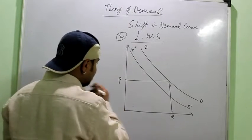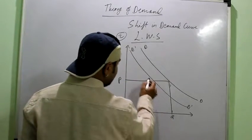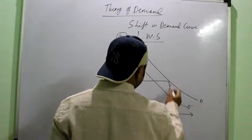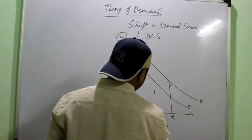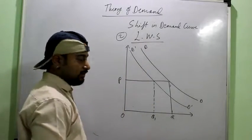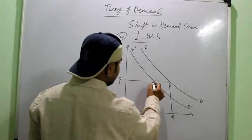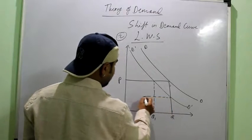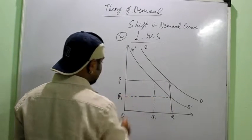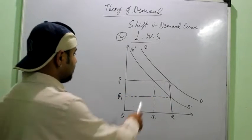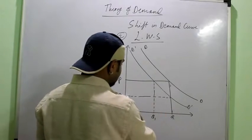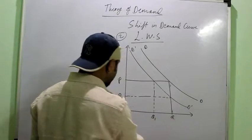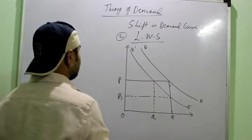Again you can see this is my original demand curve DD. This is the original quantity, this is the original price. Suppose the quantity decreases at the same price, then it is the first condition. And joining it from here, here you get the second condition. First condition is when less is demanded at the same price, and second is when same is demanded at the lower price. The cause is again this is the opposite of the right version.